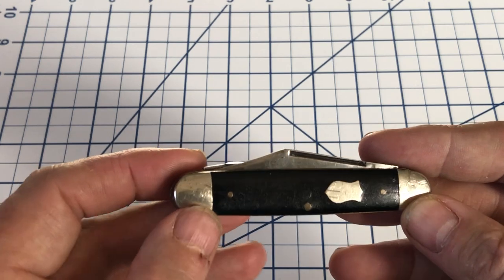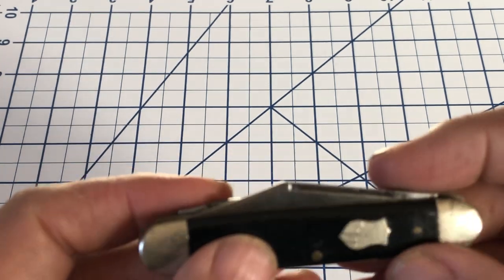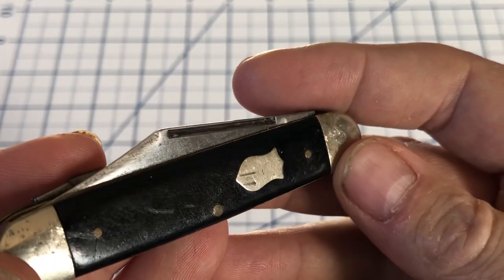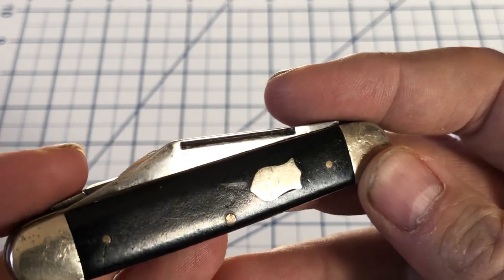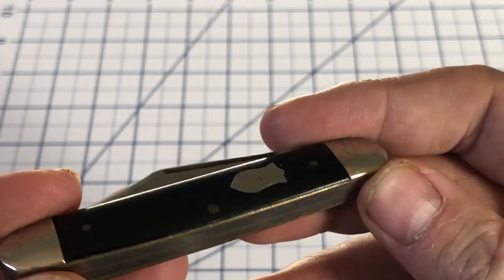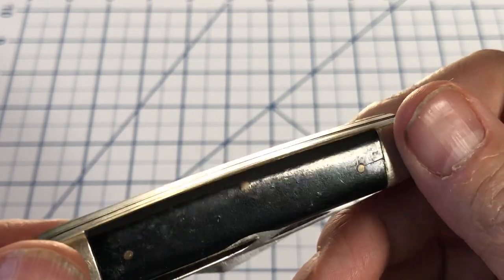It's called a Farmer's Stock Knife with a Punch. You can see it has black delrin or some type of material like that. It covers on the handles. Three-pin construction.